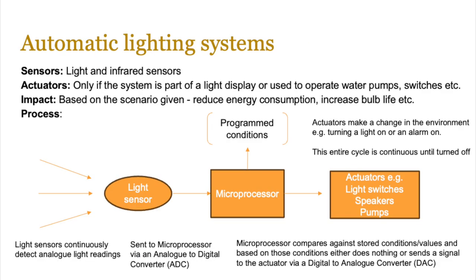Now let's start looking at the scenarios that you might need to talk about and how automated systems could impact those. The advantages and disadvantages generally apply to most of these. However, we're going to look at the operation of each of these contexts, starting with automatic lighting systems.